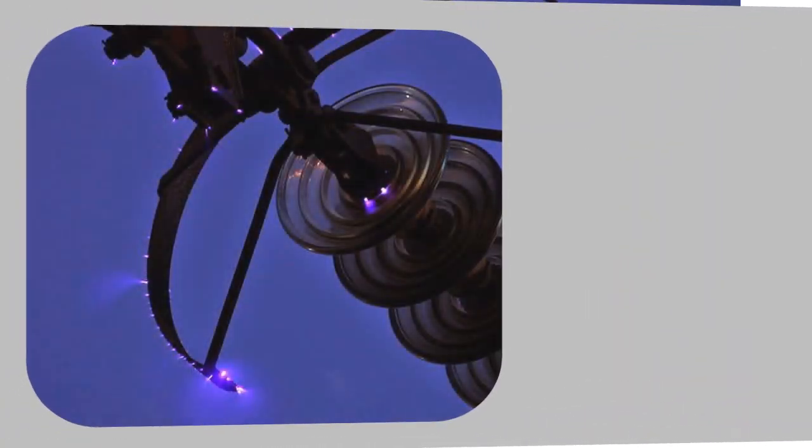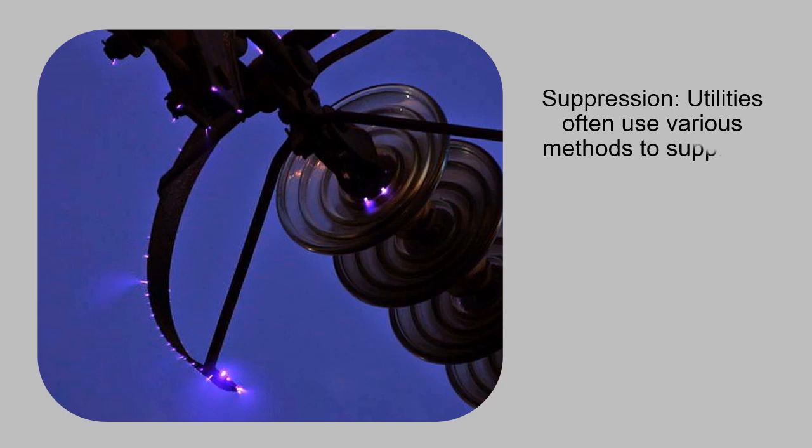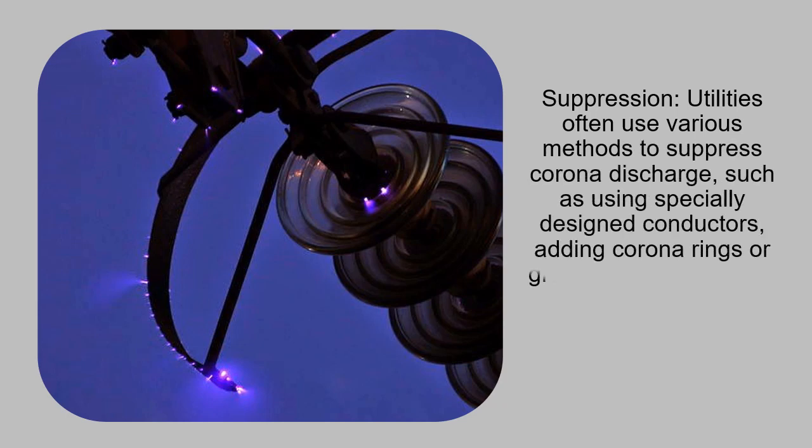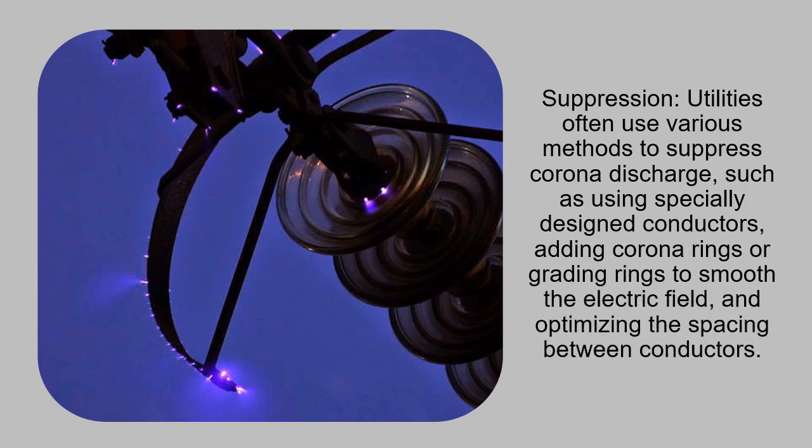Suppression: Utilities often use various methods to suppress corona discharge, such as using specially designed conductors, adding corona rings or grading rings to smooth the electric field, and optimizing the spacing between conductors.